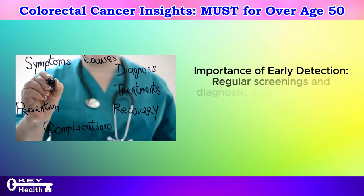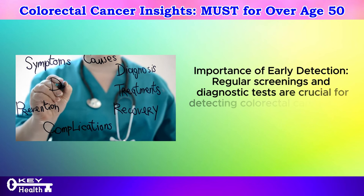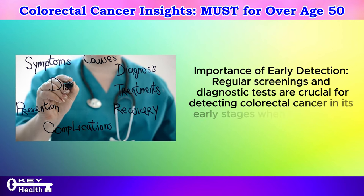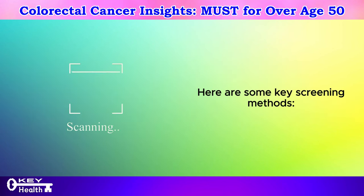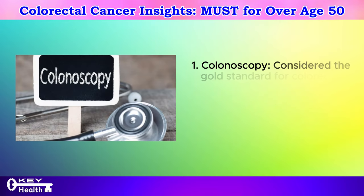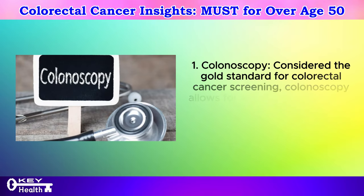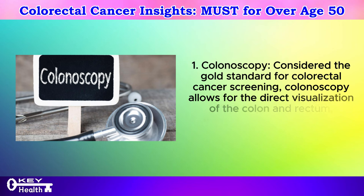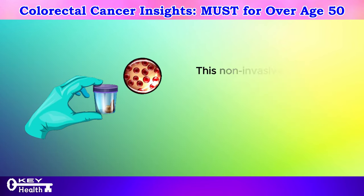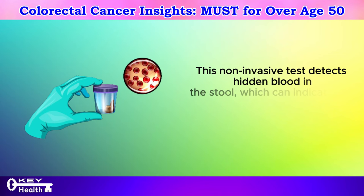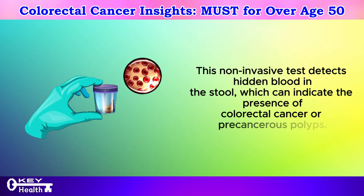Importance of early detection: regular screenings and diagnostic tests are crucial for detecting colorectal cancer in its early stages when treatment is most effective. Key screening method 1: Colonoscopy — considered the gold standard for colorectal cancer screening — allows for the direct visualization of the colon and rectum, enabling the detection and removal of precancerous polyps. Screening method 2: Fecal occult blood test (FOBT) — this non-invasive test detects hidden blood in the stool, which can indicate the presence of colorectal cancer or precancerous polyps.